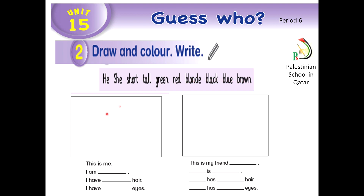Here in this box, draw yourself. Here, you should write tall or short. Then, I have blonde, black, or brown hair.